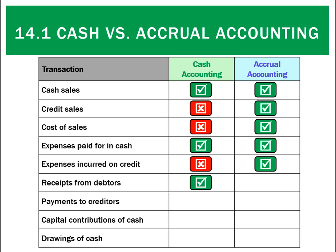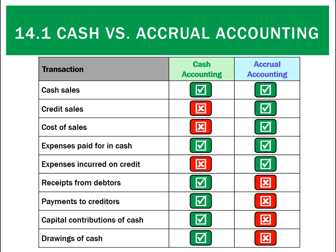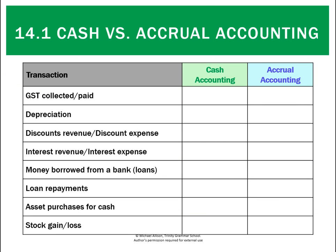Receipts from debtors are money we are receiving but they're not revenue for this period — the sales have already been made. Conversely, payments to creditors have the same effect: when we pay the money it's recorded under cash accounting, but under accrual accounting that's not an expense. Capital contributions increase cash but don't affect accrual accounting because they're not revenue, and drawings likewise are not expenses. Any GST collected or paid is recognized in cash accounting; under accrual accounting it's not a revenue or an expense. Depreciation is the opposite — no cash changes hands so we wouldn't recognize it in cash accounting, but we would call it an expense because it has been incurred under accrual accounting.